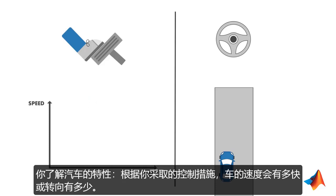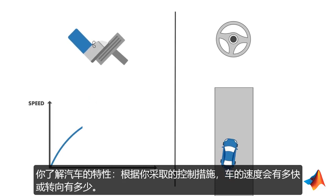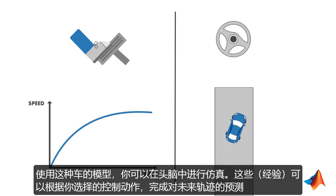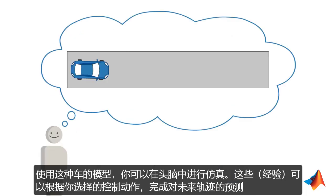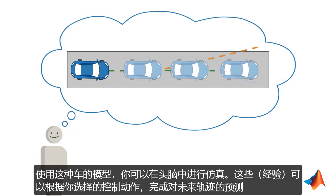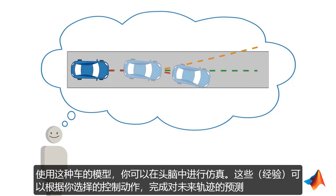You know your car's characteristics — how fast it goes, or how much it turns based on the control actions you take. Using this model of the car, you do simulations in your head. These give you predictions about your future trajectory based on the control actions you choose.